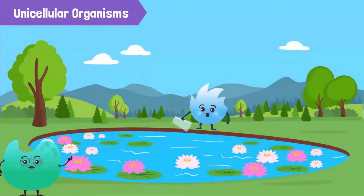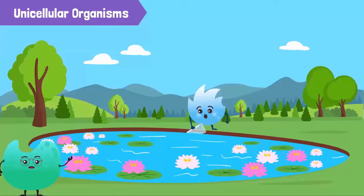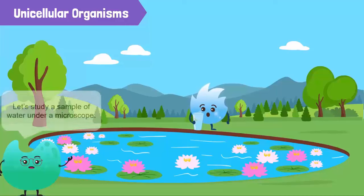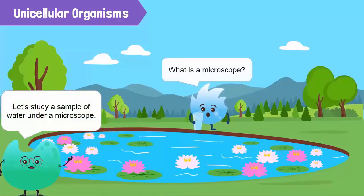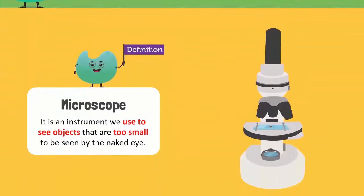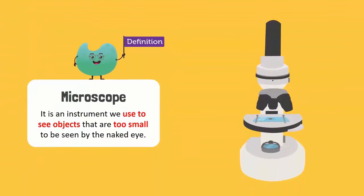Why don't you get some water from the pond so we can study it under a microscope? What's a microscope? It's an instrument we use to see objects that are too small to be seen by the naked eye.